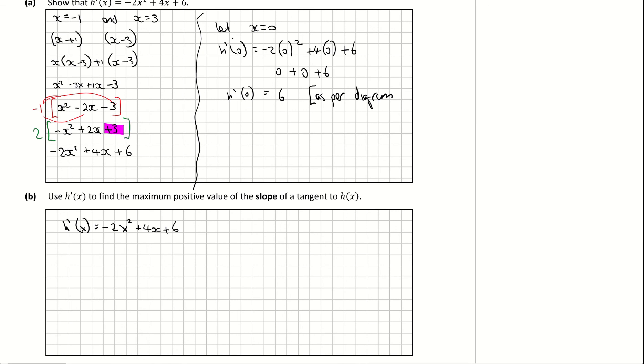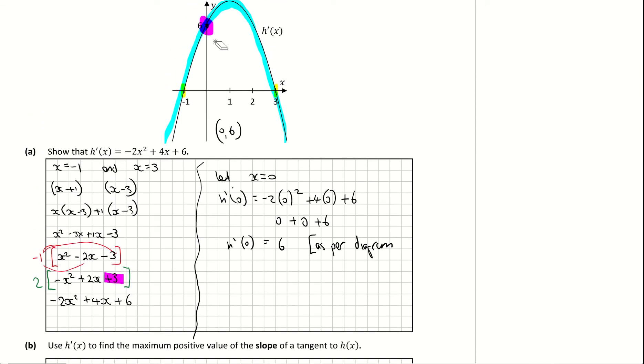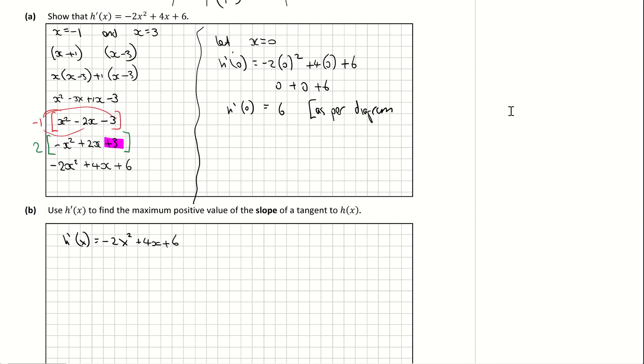So all I'm going to do here is if I come back up to my graph, you can see from my graph, let's just erase some of these markings here, that the maximum turning point on that graph here is when x is 1. So I basically just need to find its corresponding y value there. And in order to do that, I'm going to sub 1 in for x.